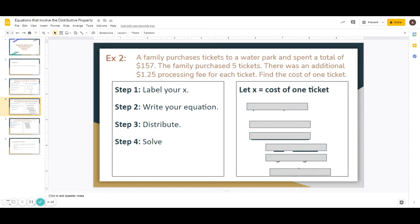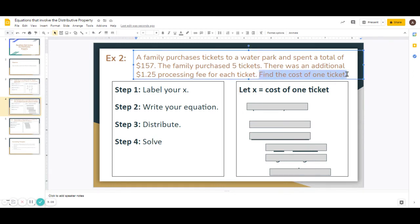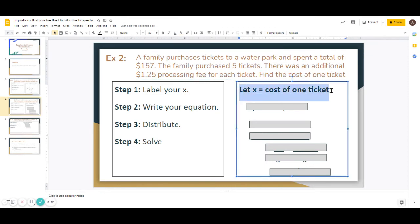All right, so in our example 2, we have a family purchases tickets to a water park and spent a total of $157. The family purchased 5 tickets. There is an additional $1.25 processing fee for each ticket. Find the cost of one ticket. So the first thing we're going to do is we're going to label our x. And we're going to get that again by looking at what the question is that we're being asked. We're being asked to find the cost of one ticket. So let x equal our cost of one ticket.